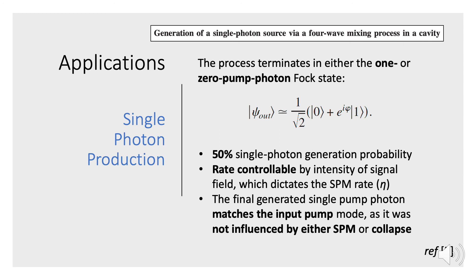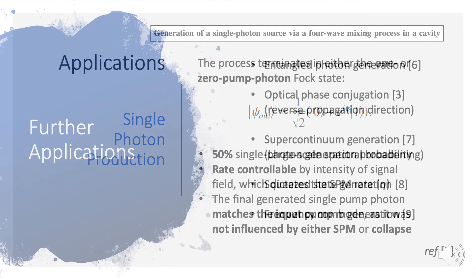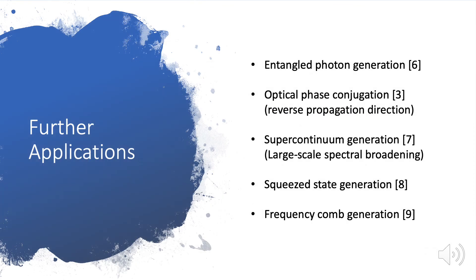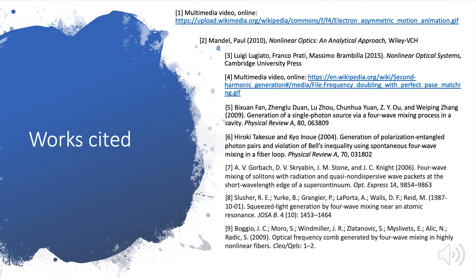That final generated single pump photon will match the input pump mode, as it was not influenced by the collapse process. Four-wave mixing also has further applications: entangled photon generation, optical phase conjugation — the reversal of the propagation direction of the source field — super-continuum generation for large-scale spectral broadening of one input mode, generation of squeezed states, and frequency combs. That's all for today. Thanks for listening.